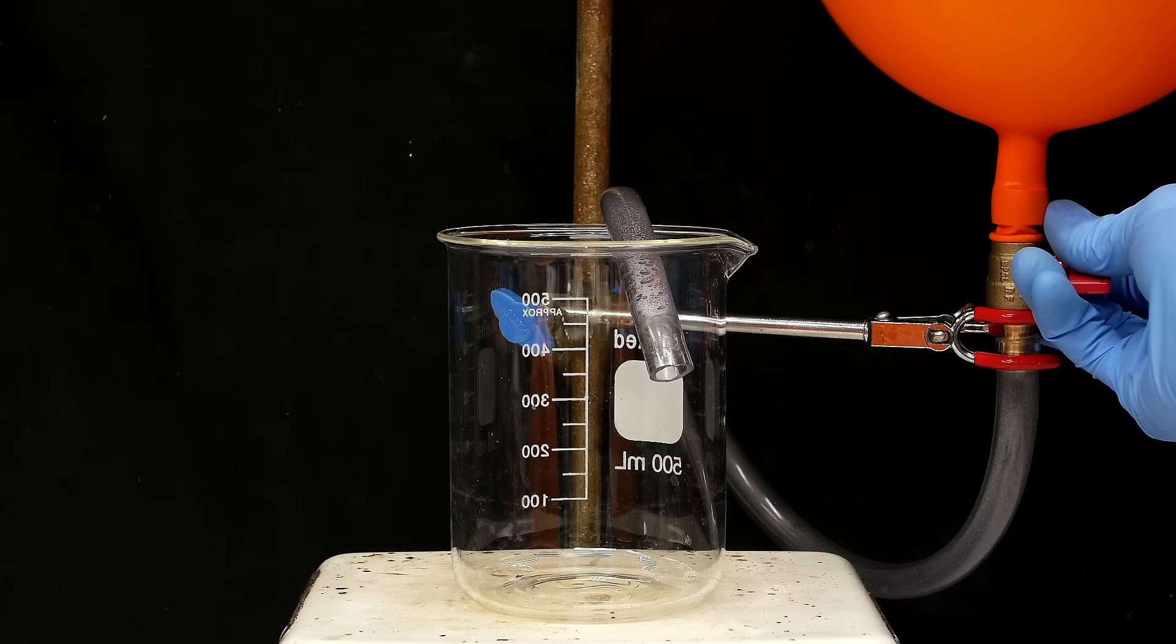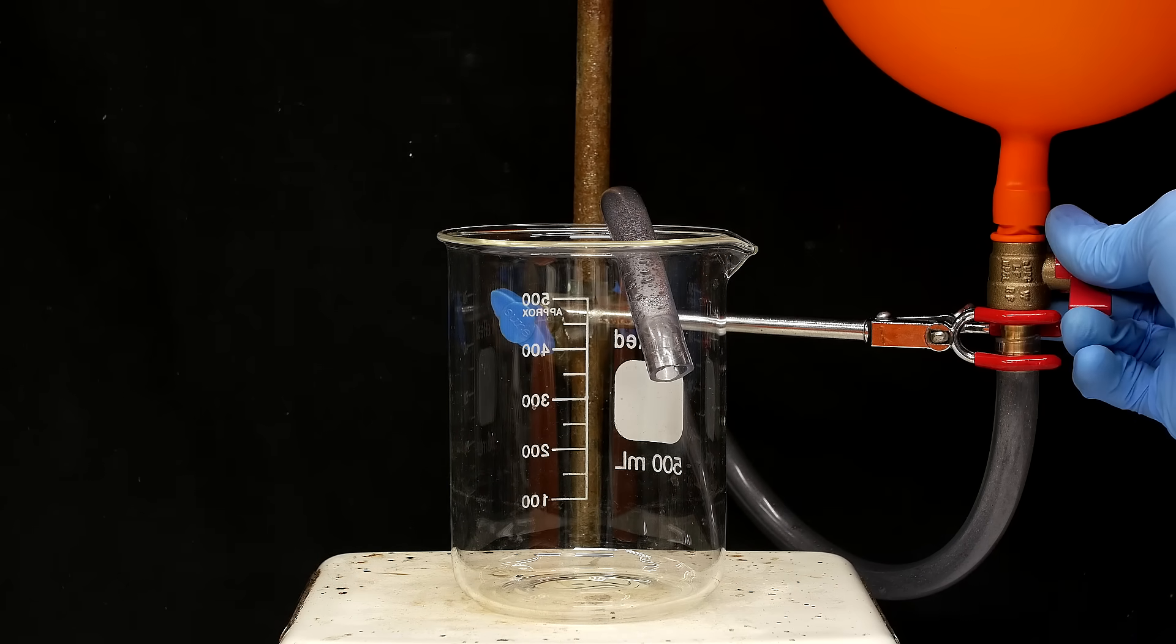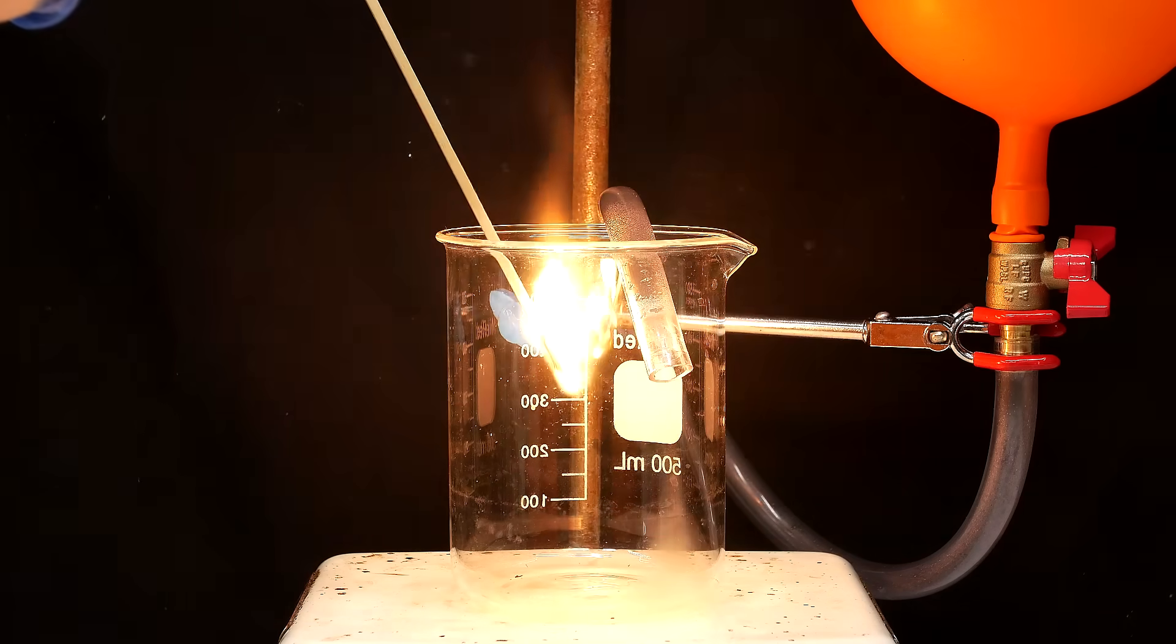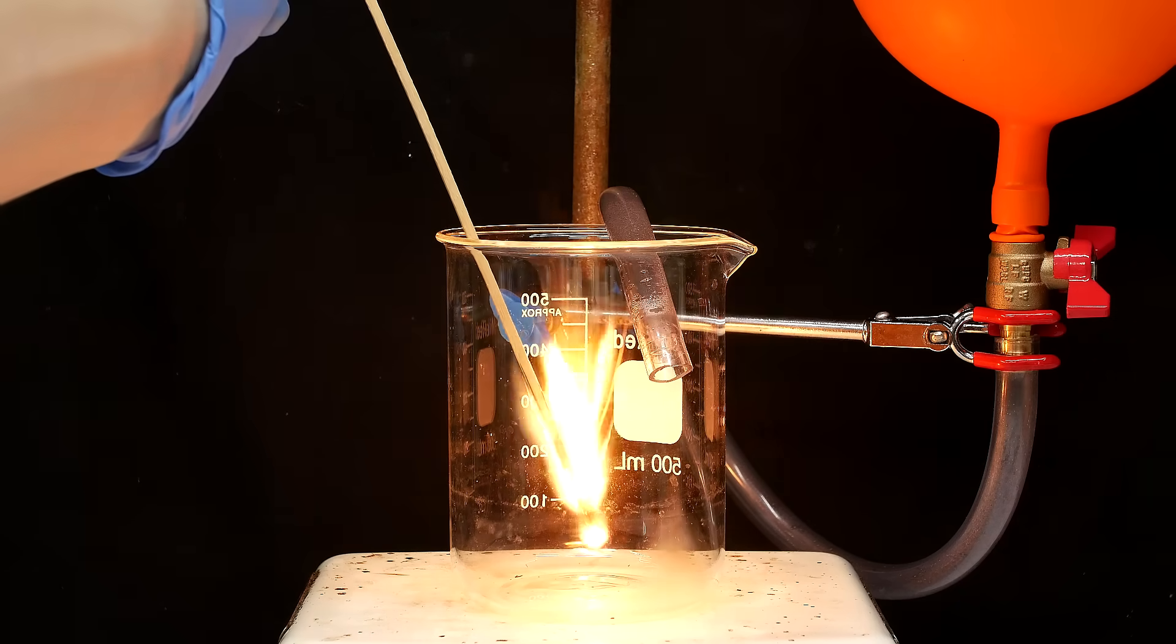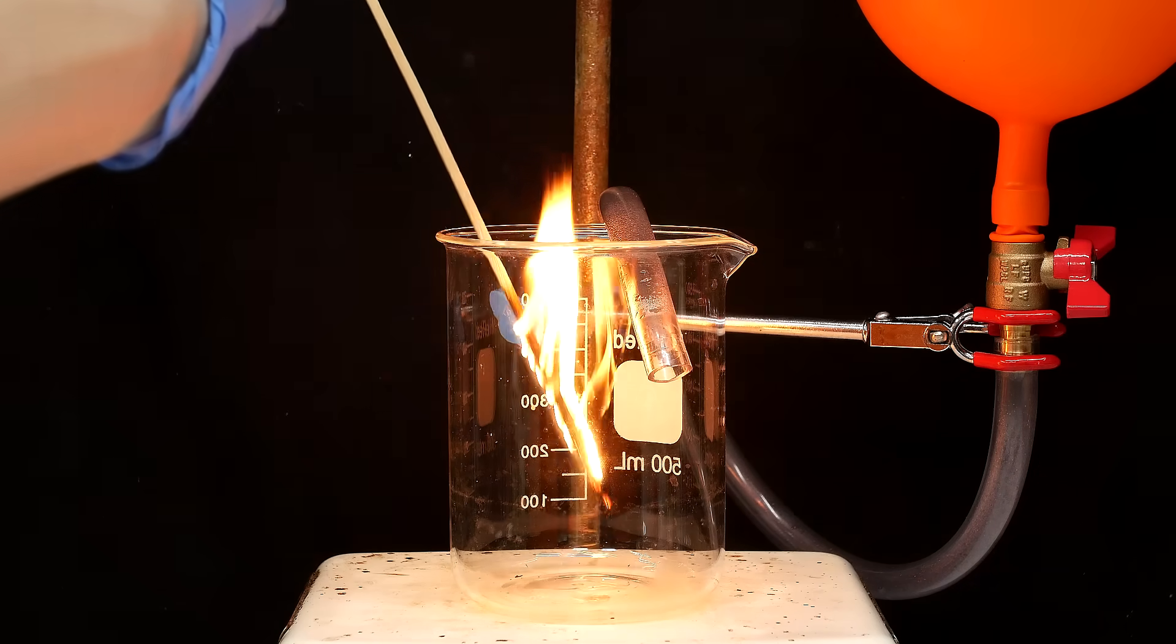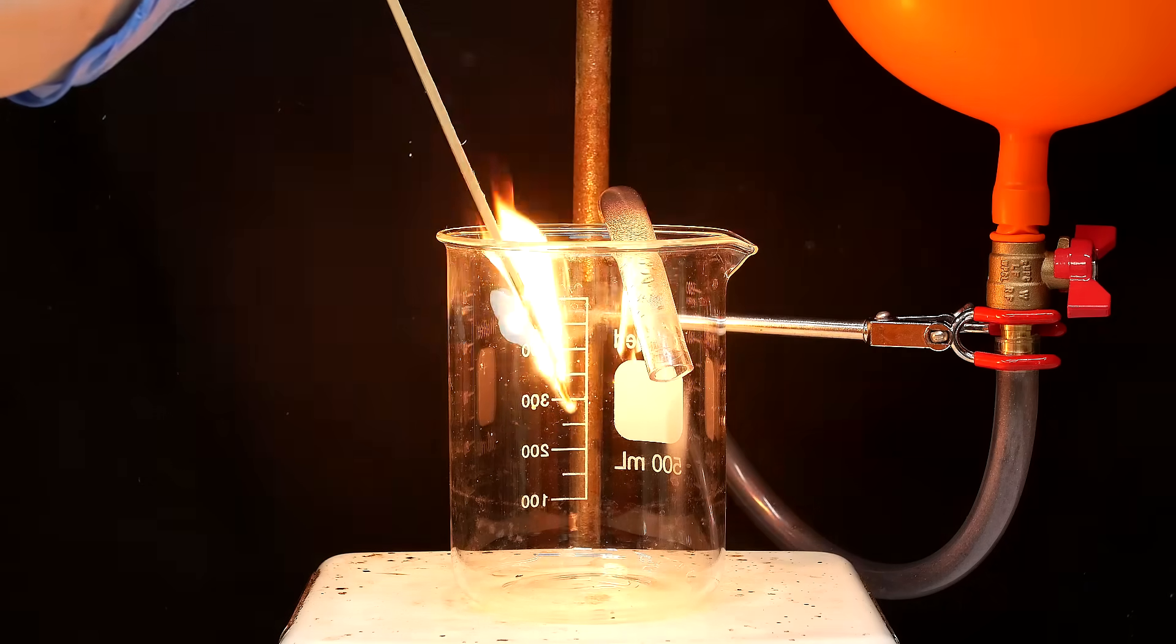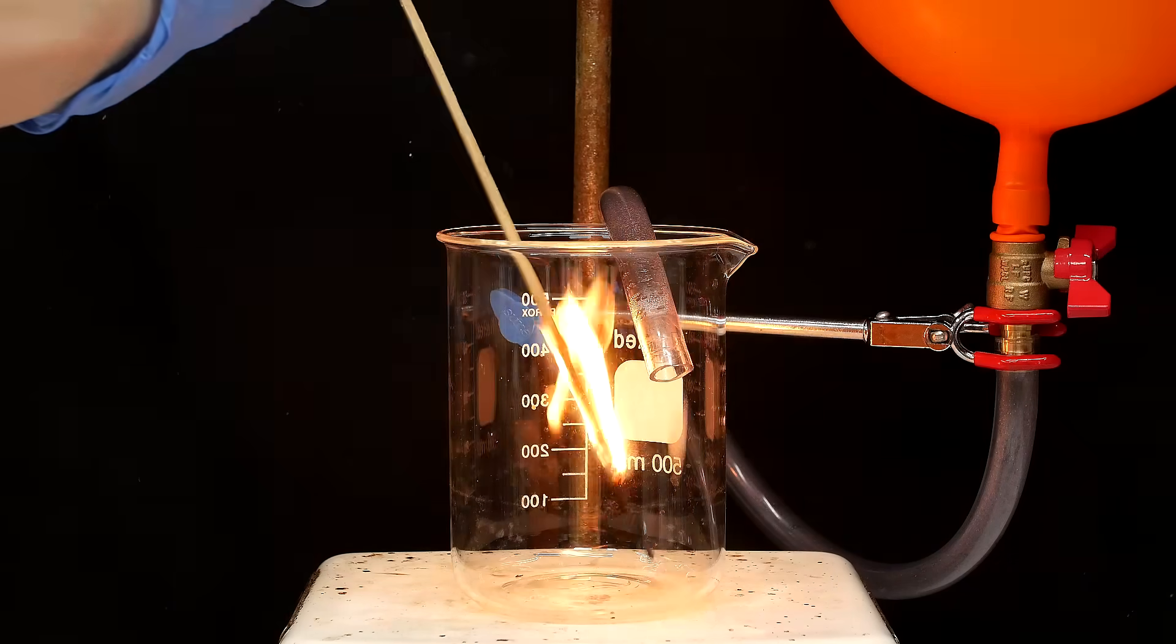In the next run, I open the valve slightly to continuously flush the beaker with nitrous. This time when I add the splint, we can see that it burns a lot better. This happens because the heat of the flame breaks down the nitrous oxide to nitrogen and oxygen gas. The extra oxygen is then picked up by the burning splint.